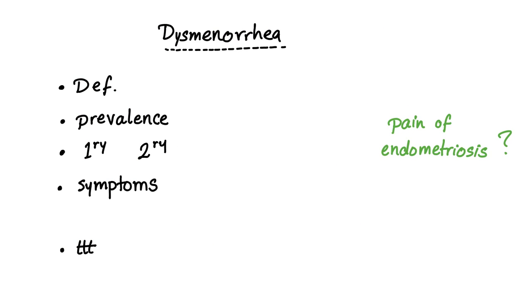First, what is dysmenorrhea? Dysmenorrhea is pain and cramping occurring during menstruation. They may be severe enough to interfere with normal activity. Prevalence: maybe half of women get dysmenorrhea at some point of their lives.